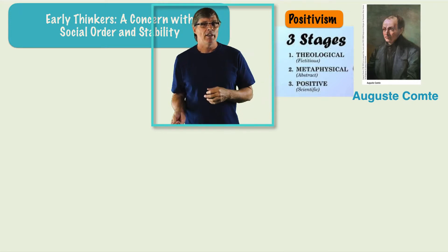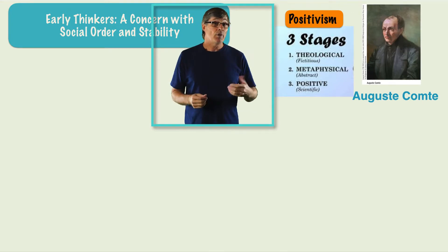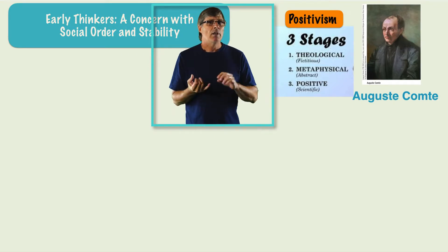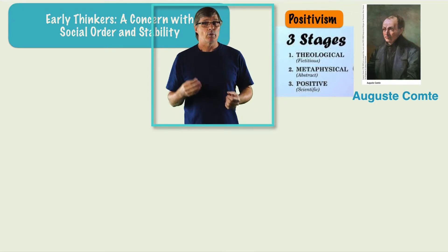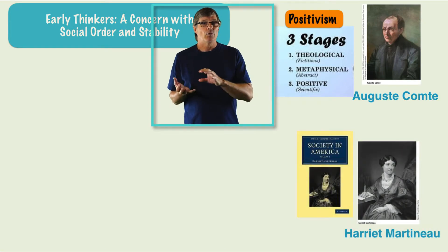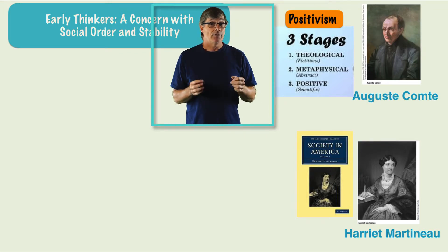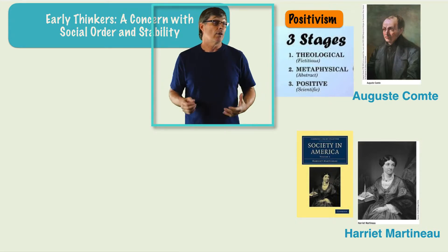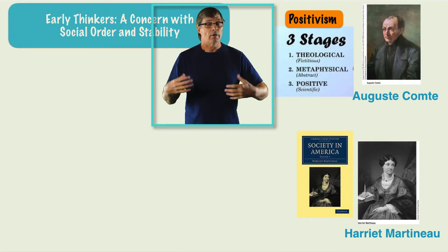Auguste Comte promoted positivism — a belief that the world can be best understood through scientific inquiry. Comte believed that objective, bias-free knowledge was attainable only through the use of science rather than religion, which was a huge change for the time. Harriet Martineau advocated racial and gender equality. She analyzed how large-scale social structures influence the lives of people, particularly women, children, and those marginalized by virtue of being criminal, mentally ill, disabled, poor, or alcoholic. This put a different spin on the way they looked at social problems.